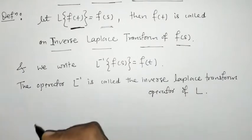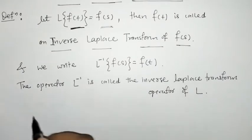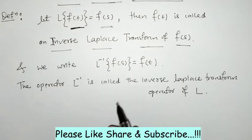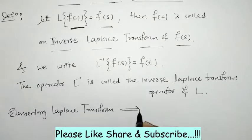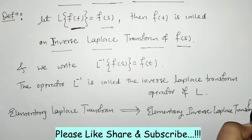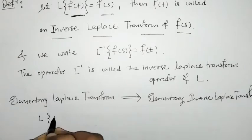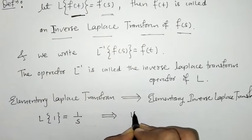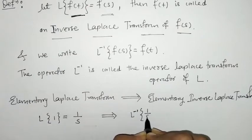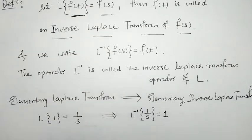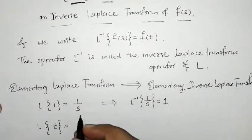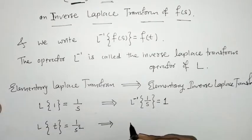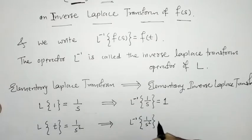In previous lectures we have seen some elementary Laplace transforms, and from these we will find inverse Laplace transforms. We know that L{1} = 1/s, so from this, L⁻¹{1/s} = 1. Similarly, L{t} = 1/s², so L⁻¹{1/s²} = t.